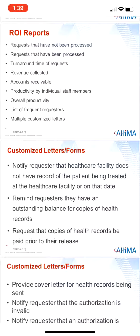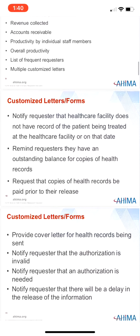HIM department managers monitor the efficiency of ROI staff through a multitude of management reports. These reports provide information on various functions including turnaround times, productivity, backlogs, revenue, and accounts receivable. Reports can include requests by employee, by requester type, by specific requester, or all requests. For example, a report on the average turnaround time for all requests or for Blue Cross Blue Shield requests can be obtained. The manager can also track turnaround times by employee, which can be used in performance evaluations. Many of these reports come prepackaged with the software, but many information systems allow users to develop and customize their own routine and ad hoc reports.